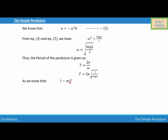Now substituting I equals ML squared (the rotational inertia), we get T equals 2 pi times the square root of ML squared over MgL. Cancelling the common terms, we get T equals 2 pi times the square root of L over g. This is the time period for a simple pendulum, and this is how we define a simple pendulum and its time period.